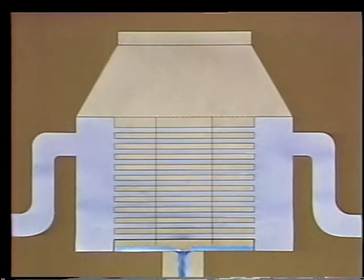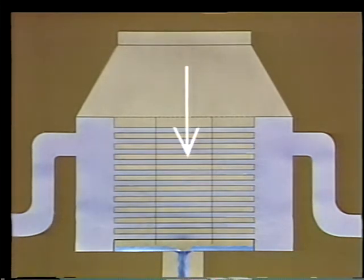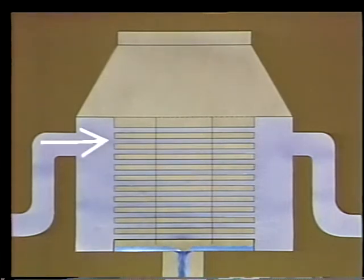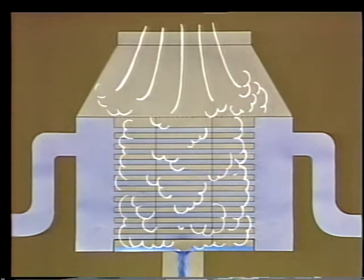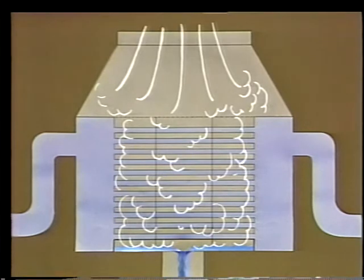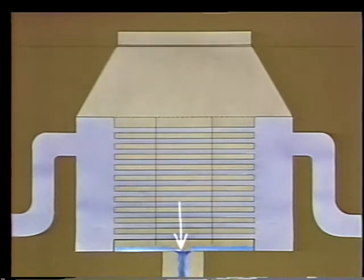A condenser is a heat exchanger which converts a vapor back to a liquid. The condenser on a turbine takes steam directly from the turbine's exhaust and runs it over a bundle of tubes. The tubes have cold water being pumped through them from a source like a cooling pond, a river, a lake, or an ocean. As the steam passes over the tube bundle, it gives up its heat to the cooling water.